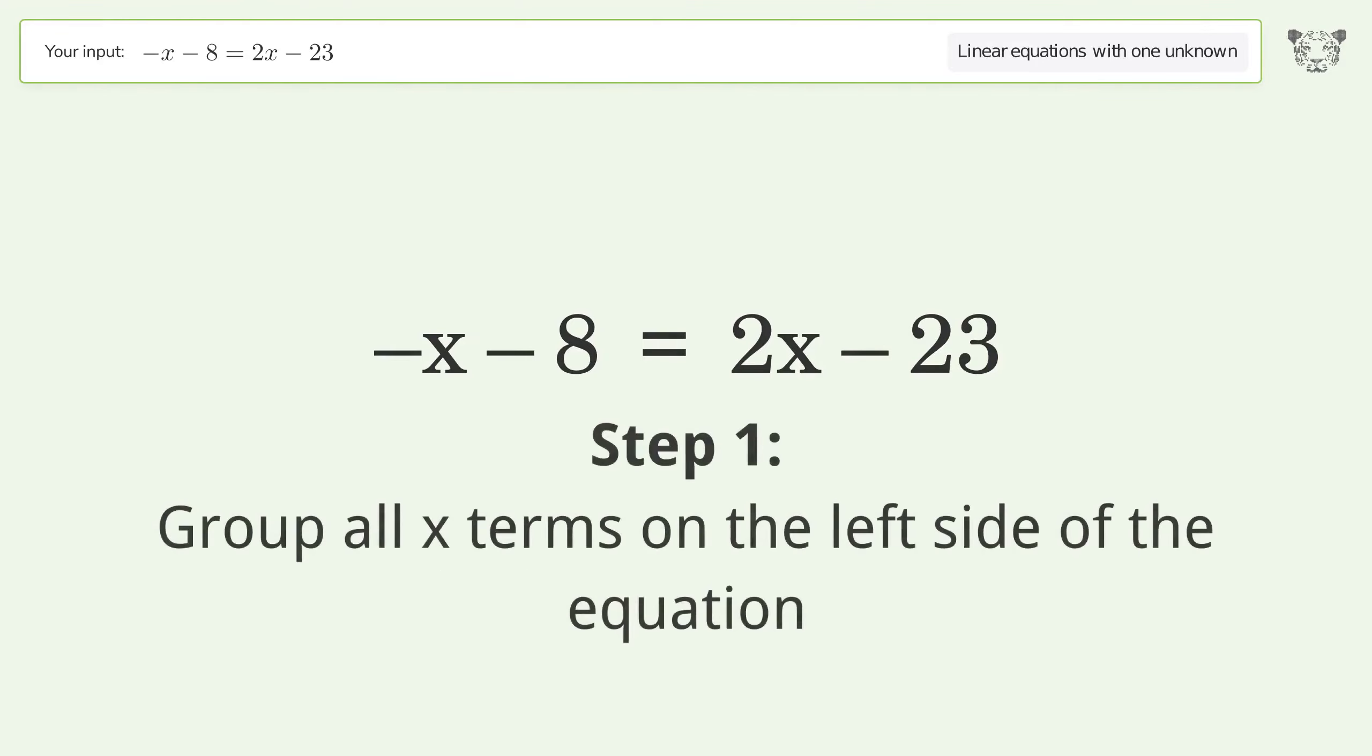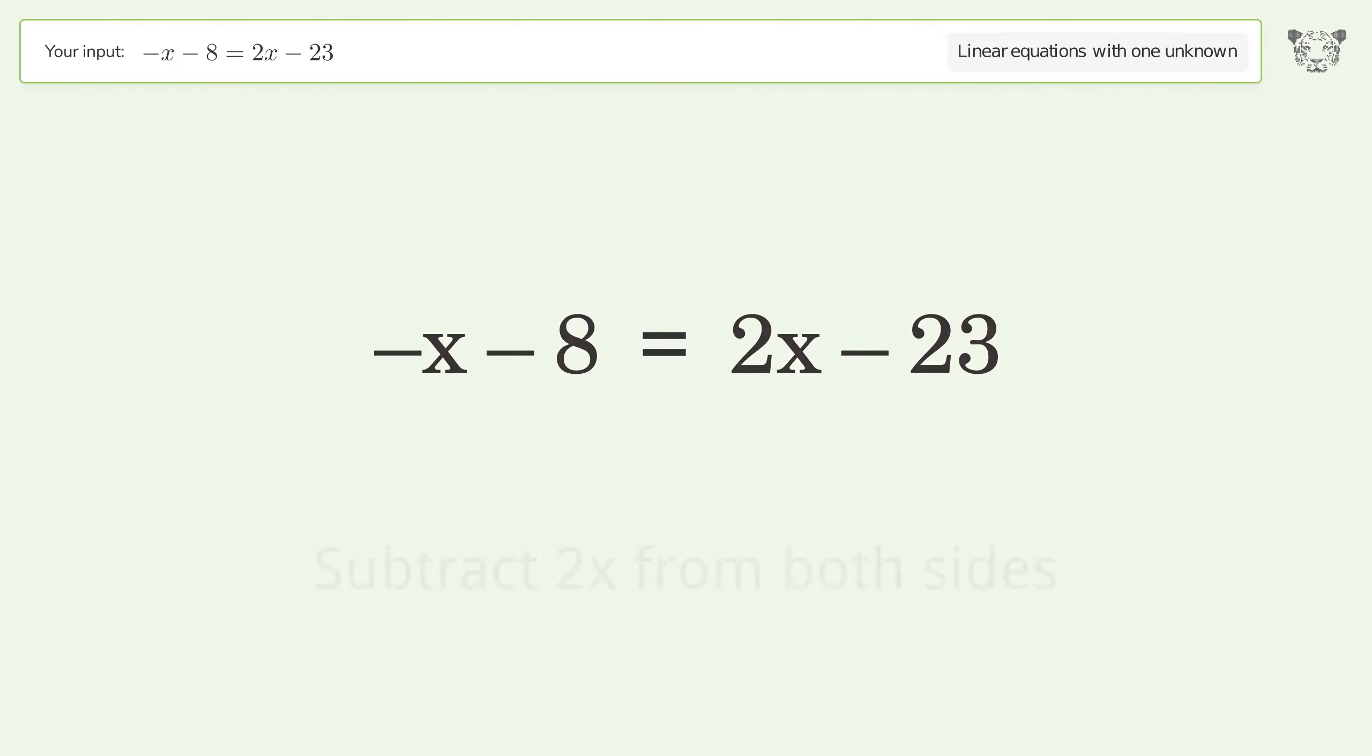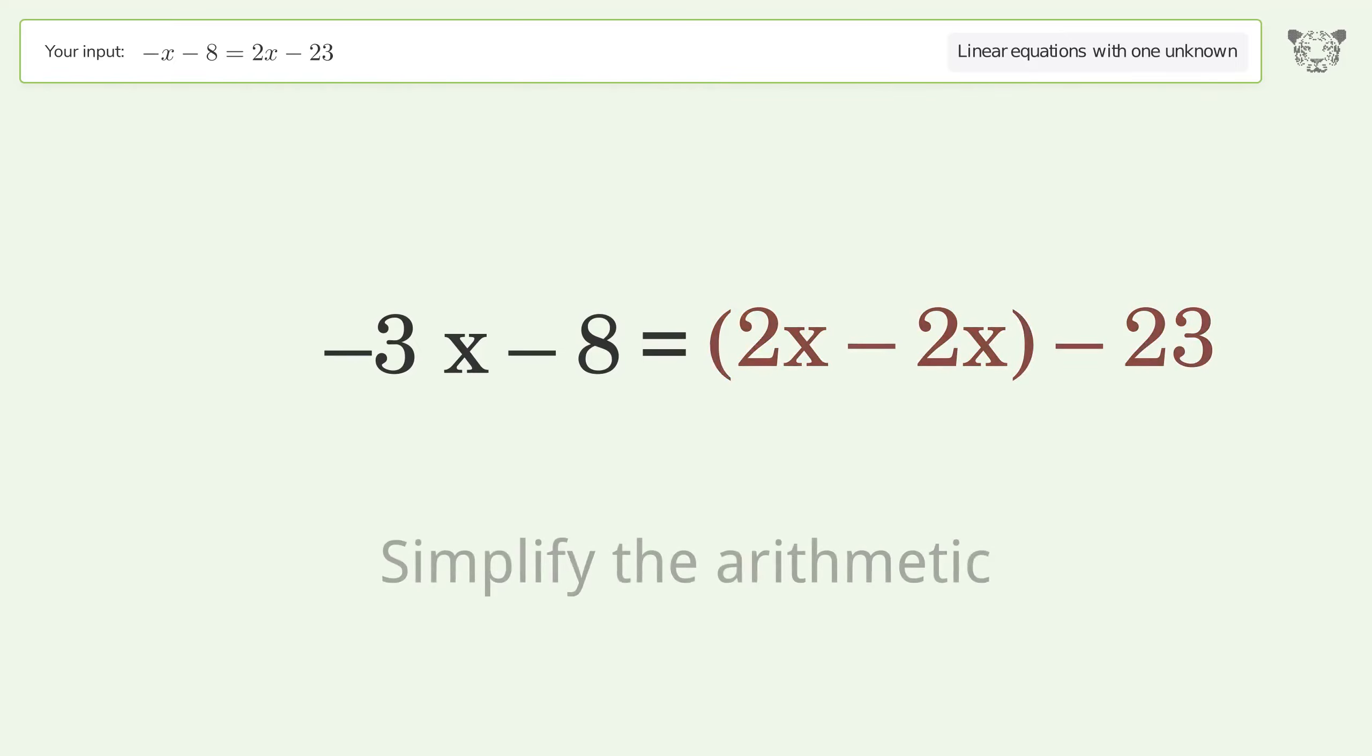Group all x terms on the left side of the equation. Subtract 2x from both sides. Group like terms. Simplify the arithmetic. Group like terms. Simplify the arithmetic.